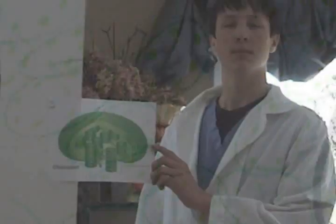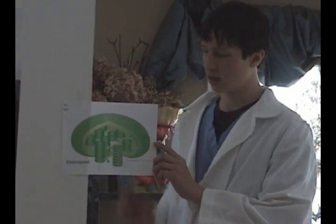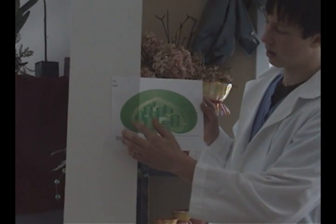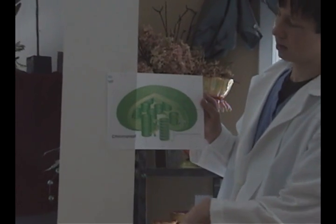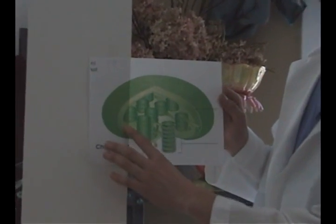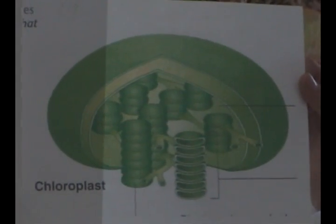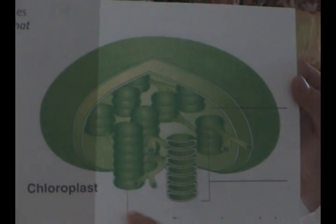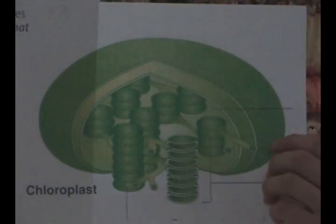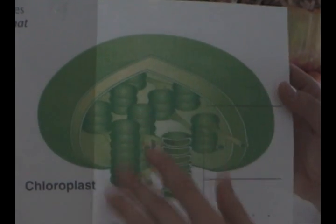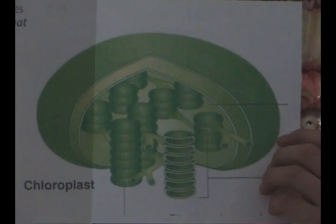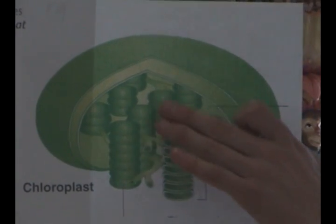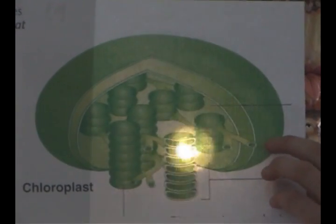This is a model of a chloroplast. A chloroplast is made up of an inner and outer membrane. Inside the membranes is another layer called the stroma. Inside the stroma is where you find the thylakoids, which are stacks of granum. Inside the thylakoids is a photosystem, which absorbs the light energy.